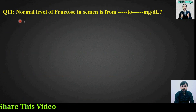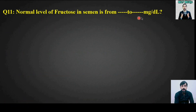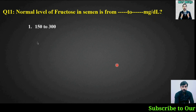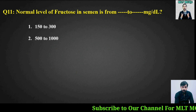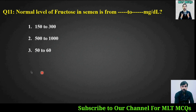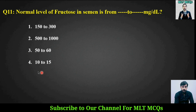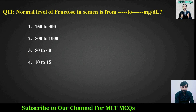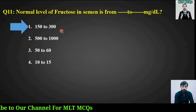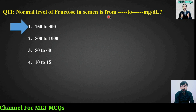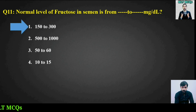MCQ number eleven: The normal level of fructose in semen is from how many milligrams per deciliter? Options are: 150 to 300, 500 to 1000, 50 to 60, or 10 to 15. The right answer is 150 to 300 milligrams per deciliter.